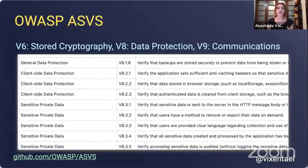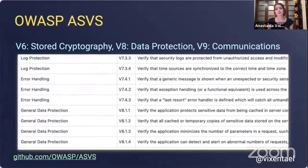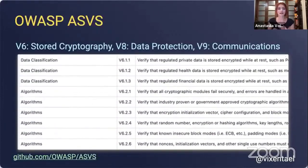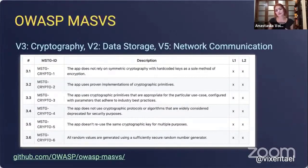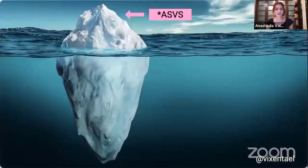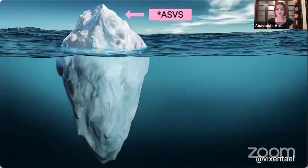You can find many cryptography and data security requirements in OWASP ASVS, mostly in chapters 6, 8, and 9. You can also find some in OWASP MASVS — the Mobile Application Security Verification Standard — in chapters 2, 3, and 5, including the MASVS-CRYPTO chapter. MASVS and MASTG are being refactored right now, so we may see even more data security requirements in the future. However, all these regulations and OWASP requirements are only the tip of the iceberg when talking about data security and encryption.